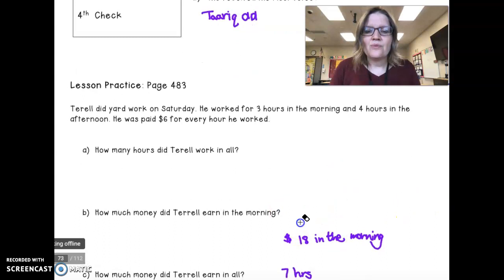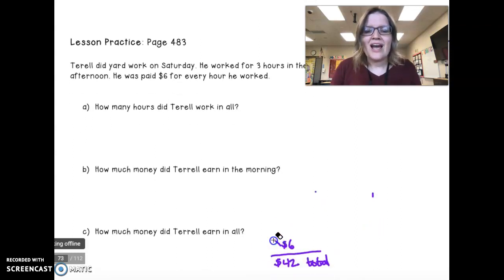Terrell did yard work for three hours in the morning and four hours in the afternoon. He was paid $6 an hour for every hour he worked. How much did he make? Okay, we're all clean. Let's go.